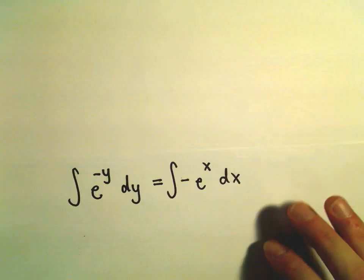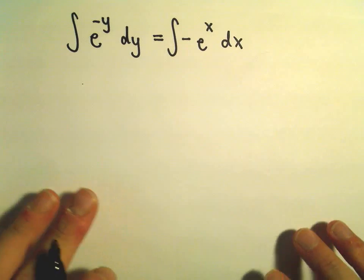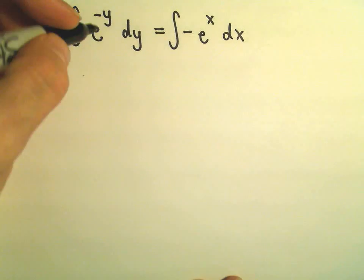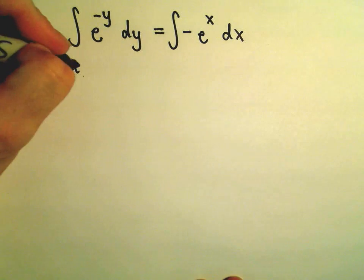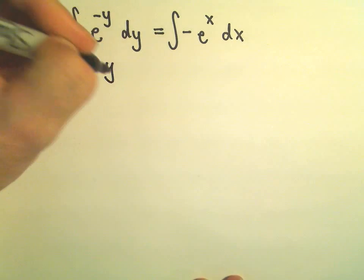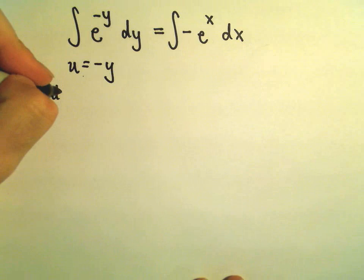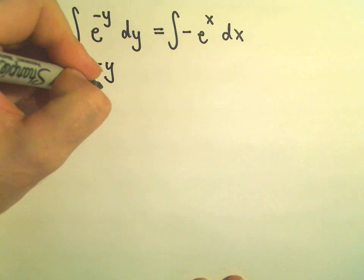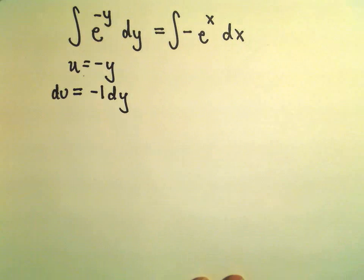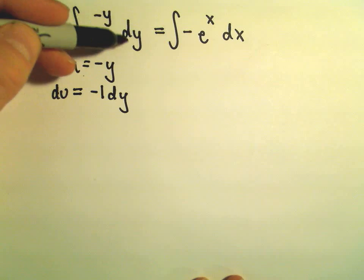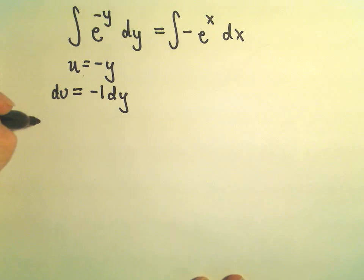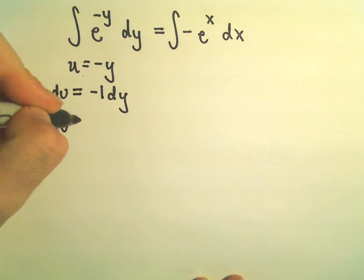To integrate the first side, these should be hopefully relatively straightforward integrations. On the left side, we could do a u substitution. Let u equal negative y. du is going to be negative 1 dy. I'm replacing positive dy, so I'm just going to multiply both sides by negative 1.